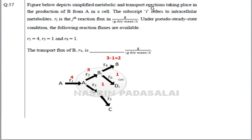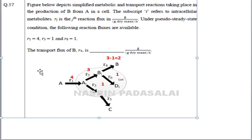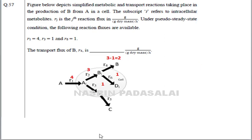Next question: a simplified metabolic and transport reaction for production of B from A in a cell. Subscript I refers to intracellular metabolites: A_I, B_I, and C_A. R3 is the j-th reaction flux under pseudo-steady state. R1 = 4 and R3 = 1 are given, so R2 = 4 − 1 = 3. To find R4: R4 = R2 − R6 = 3 − 1 = 2. Therefore R4 = 2.